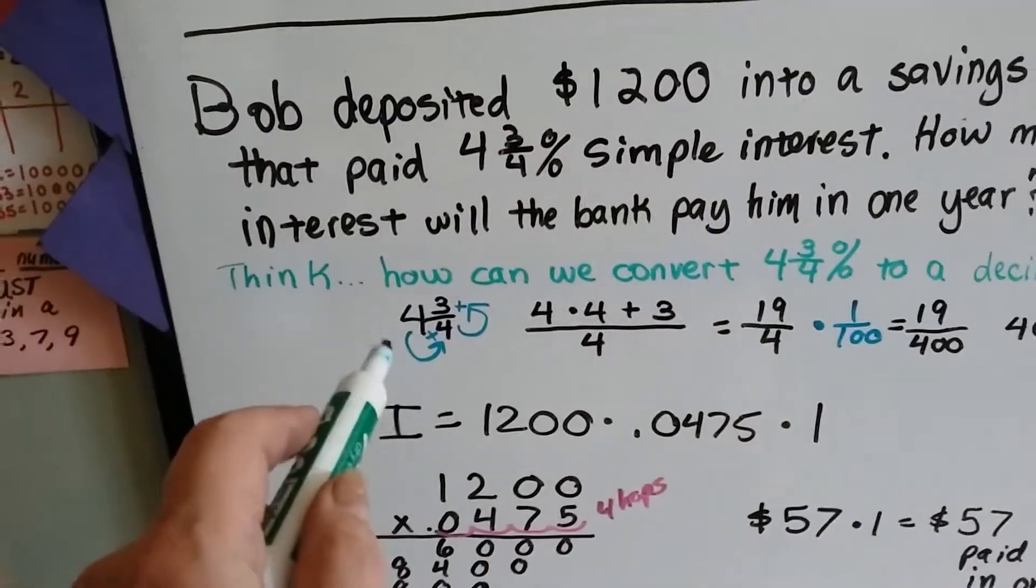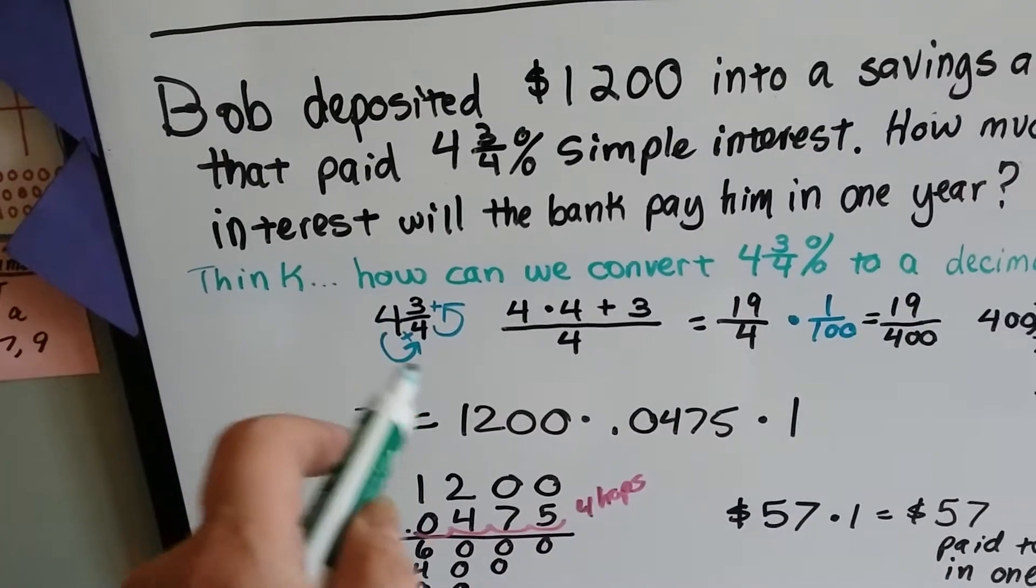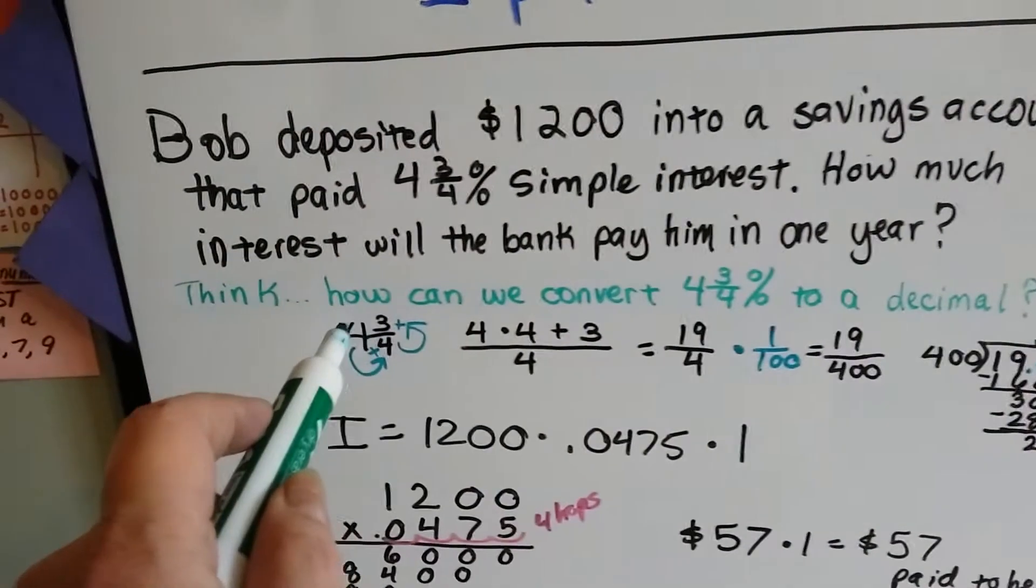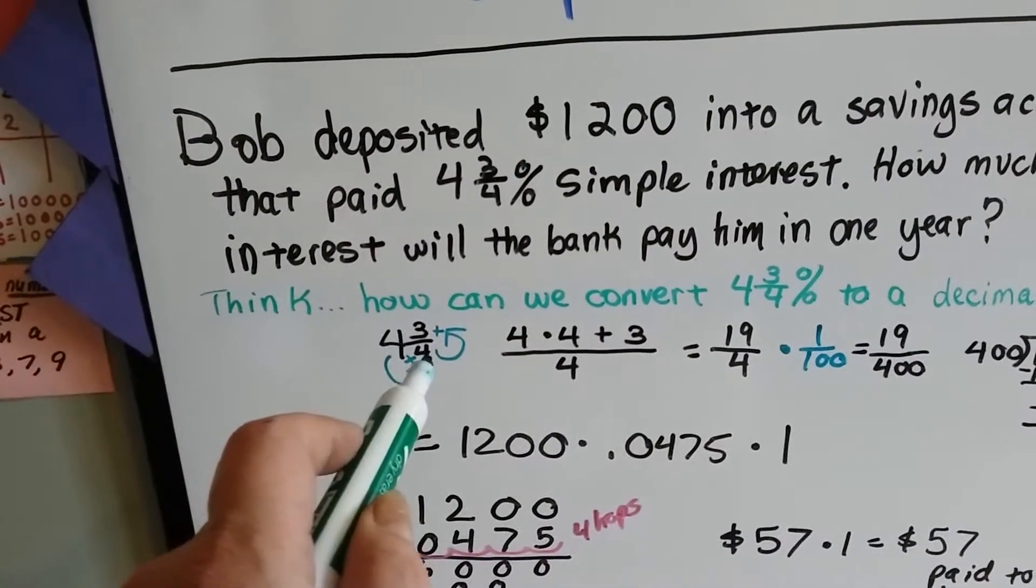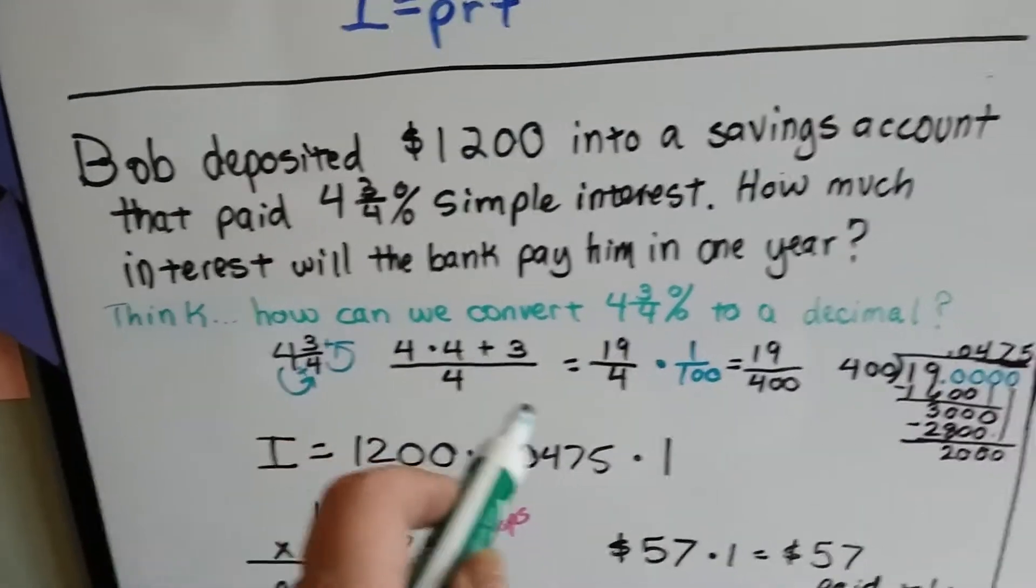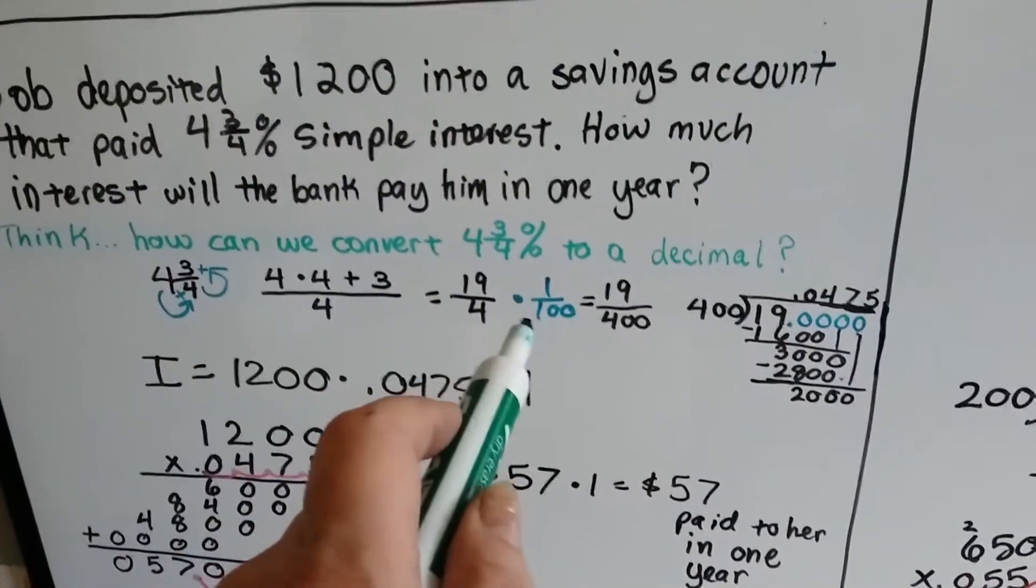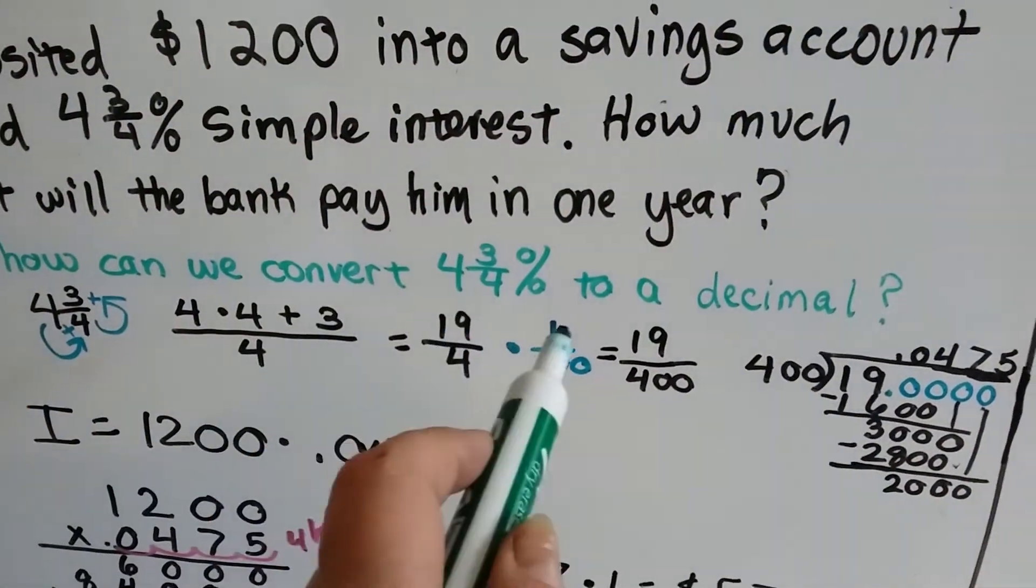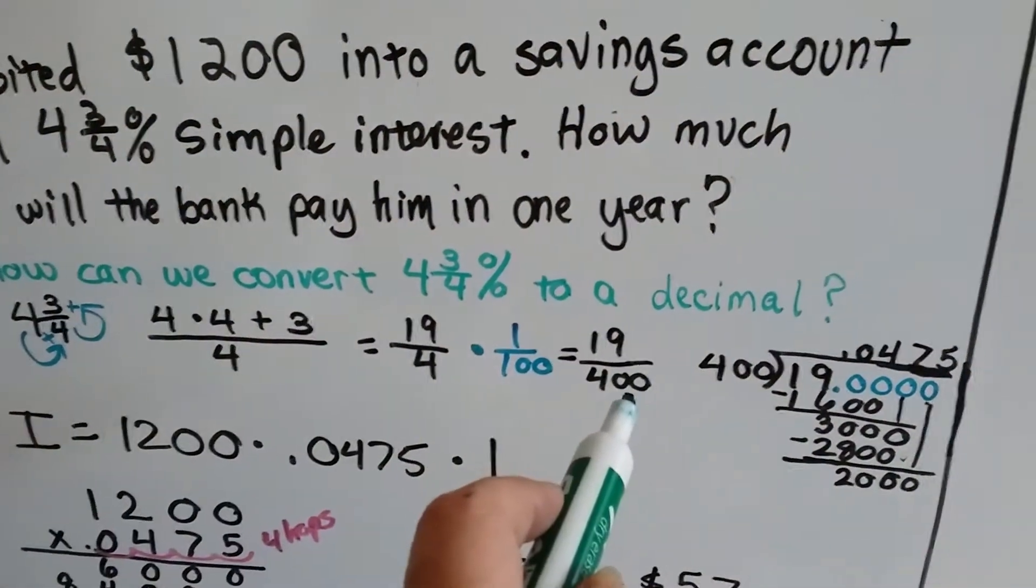Well, if you remember from 4th and 5th grade, we turn it into an improper fraction, multiply it by 1 over 100, and then divide it. 4 times 4 is 16, plus 3 is 19, and we put it over the original denominator of 4. We have 19 over 4. Part 2 is we multiply it by 1 over 100. 19 times 1 is 19, 4 times 100 is 400.